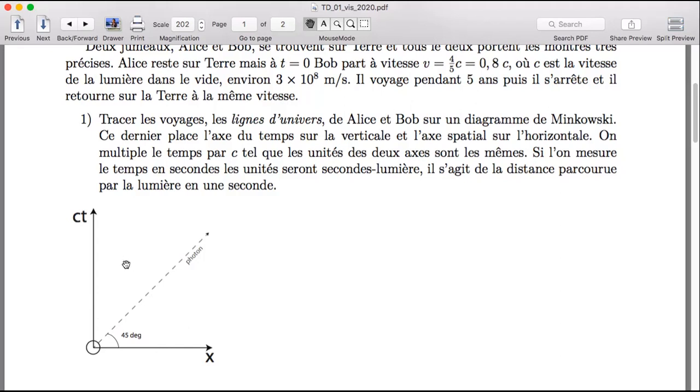Okay, because if it was inferior, it would mean that he is going faster than the speed of light. Exactly. Exactly. Yeah. Yeah. So it's going to be up here somewhere.